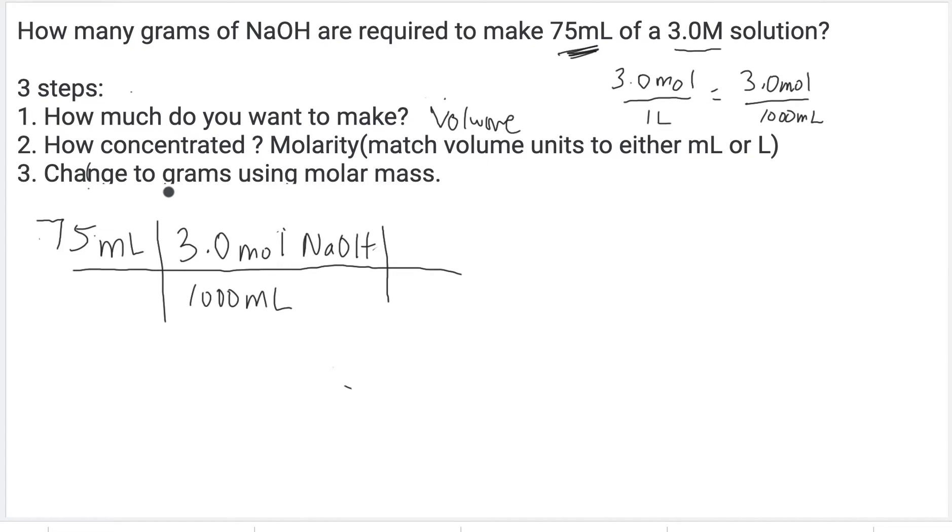The third step is changing to grams using the molar mass. So we write one mole NaOH. See how I have the principle of diagonality? Mole NaOH, moles NaOH - see how they're going diagonal?